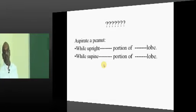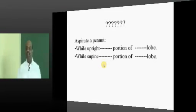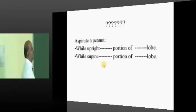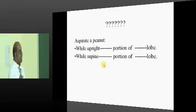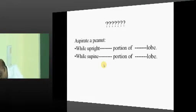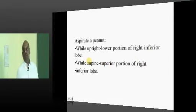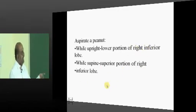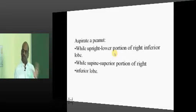If you aspirate a peanut, in the upright position, where will it go? When supine, where will it go? In the upright position, it goes to the lower portion of the right inferior lobe of the lung. In the supine position, it goes to the superior portion of the right inferior lobe. Both times it is the right inferior lobe — that is what we have to ultimately remember. The main difference is: supine goes to the superior portion, upright goes to the lower portion.